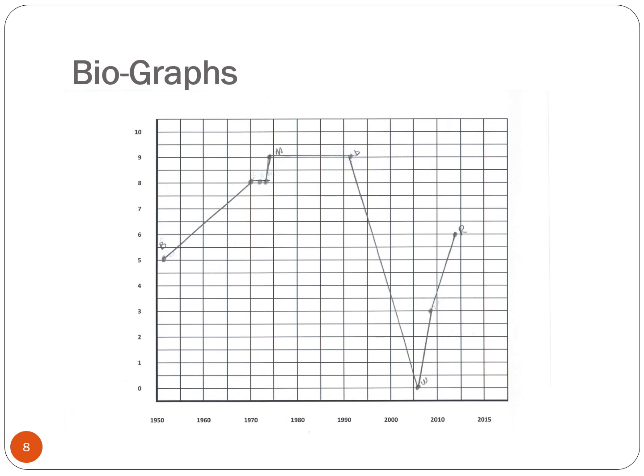Before we continue with tonight's lecture, I'd like you to take about 20 to 30 minutes to create your own biograph. A biograph is simply a chart or histogram that shows high and low points throughout your life. The chart on this slide is an abbreviated biograph of my life. Along the left vertical axis you'll see the numbers 0 through 10, and along the horizontal axis you'll see numbers that relate to the years 1950 through 2020. This biograph shows that I was born in 1952, and I gave that a score of 5 on a scale of 0 to 10, meaning I feel neutral about that event.